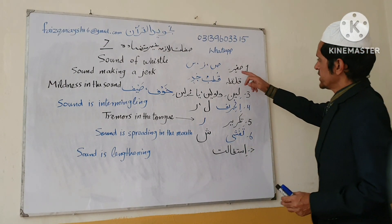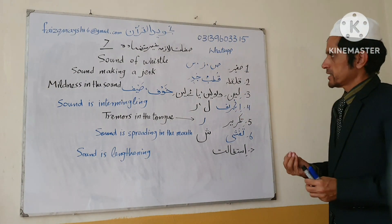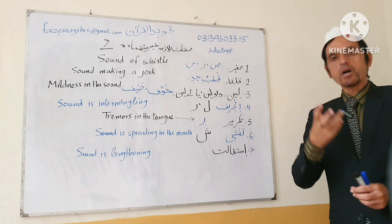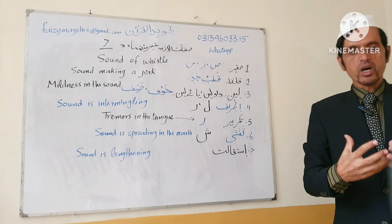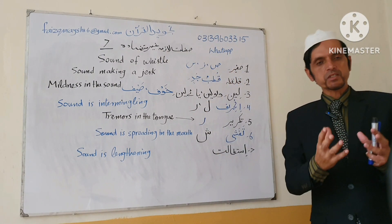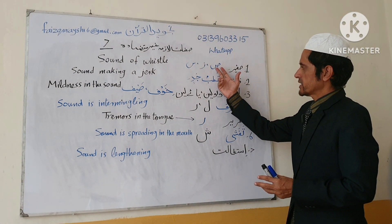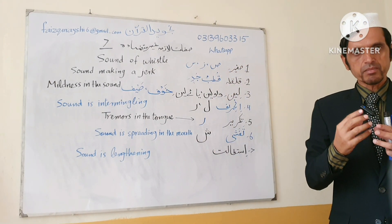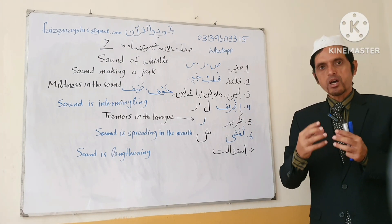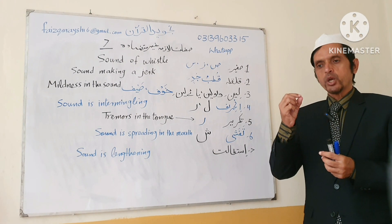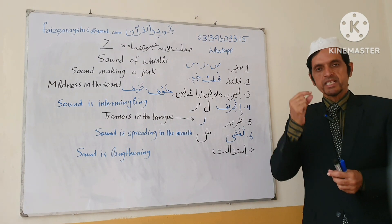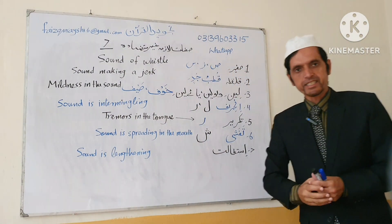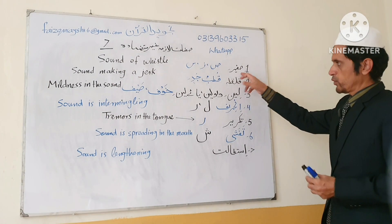Number one is Safir. Safir means the sound of a whistle — when you are whistling, that sort of sound is created when we articulate three letters of Arabic language: Swad, Za, Sin. When you articulate them, a whistling sound is created — Swad, Za, Sin. This characteristic is found in these three Arabic letters and is called Safir in Tajweed al-Quran.